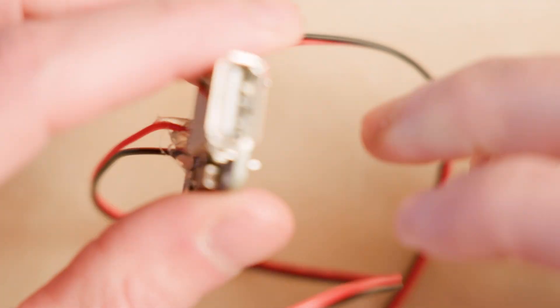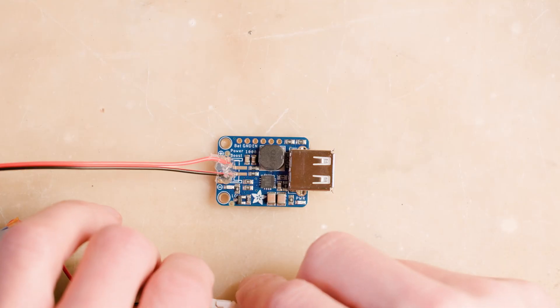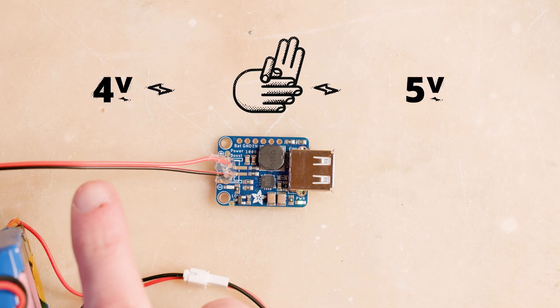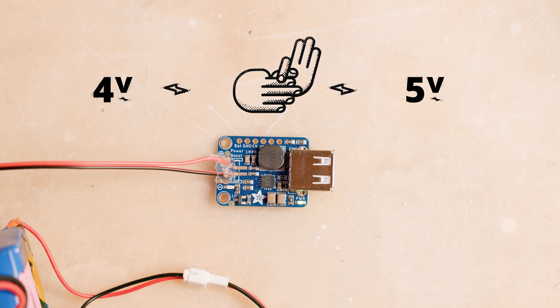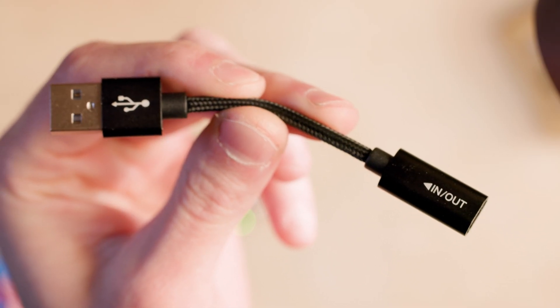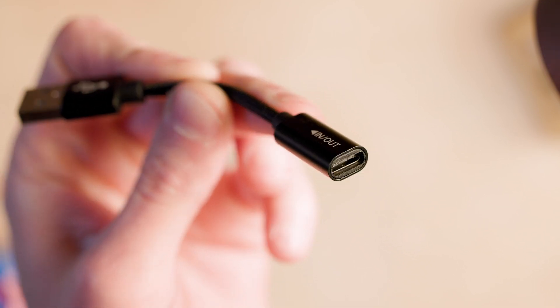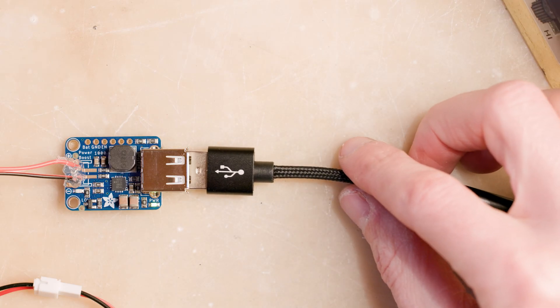This bad boy is a voltage booster and when I plug in the battery it takes the 4 volts from the battery, does a little magic trick, and spits out 5 volts which is what my phone needs to charge. And to bring it into the modern era I used this USB to USB-C adapter for the power port.